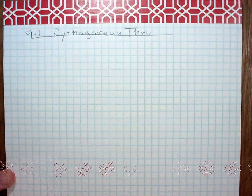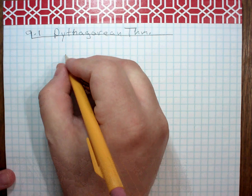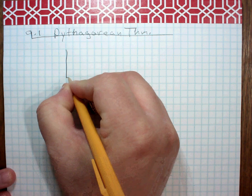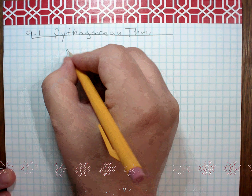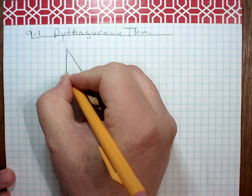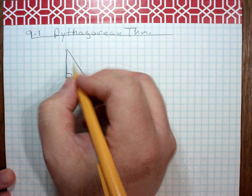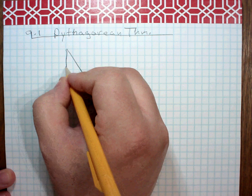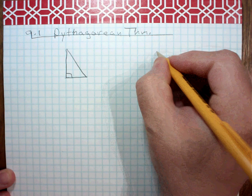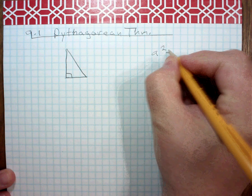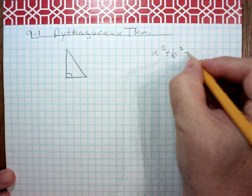So basically, if you have a right triangle, how many units is this? 1, 2, 3. So, basically, what that formula is, is A squared plus B squared equals C squared.